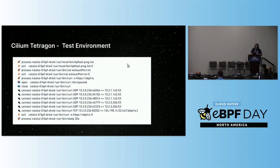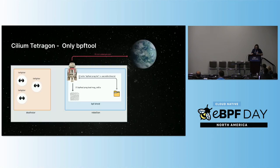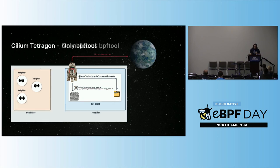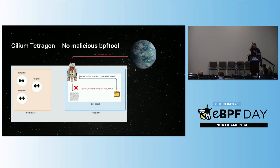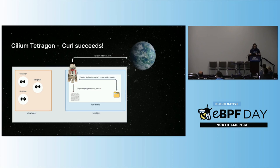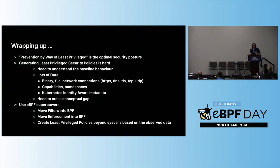I'm going to skip through all these slides that explain the demo since we just walked through it. The same pretty printer we saw shows that this pod connects to the world and we can block it. If BPF tool tries to load something we don't expect, it doesn't load. Curl still works, except when it goes somewhere we don't want.